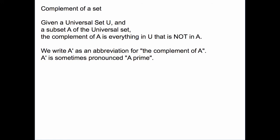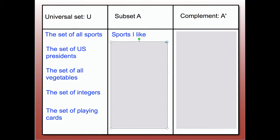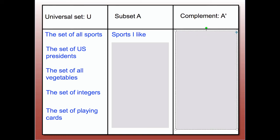Here are some examples of universal sets, subsets, and their complements. If U is the set of all sports and the subset A is sports I like, then A-prime — the complement of A — is going to be sports I don't like.